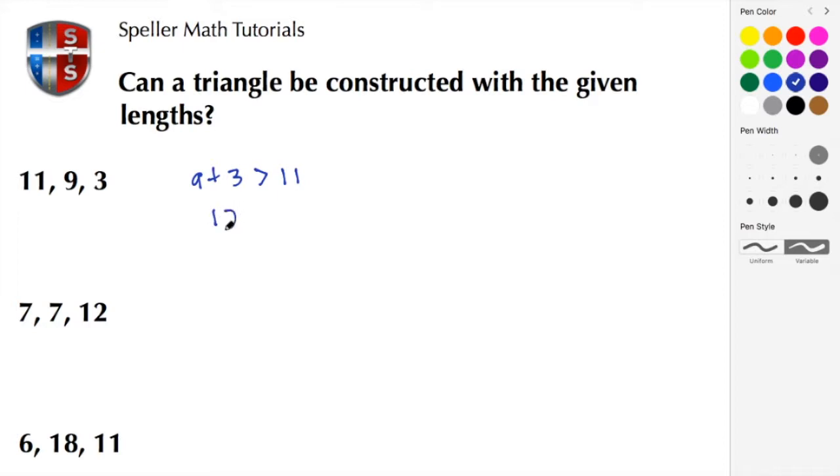Here I have 9 plus 3 to give me 12, and I see that 12 is greater than 11. So that means that these three lengths can be configured into a triangle.